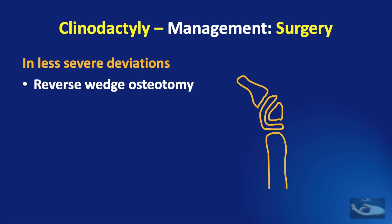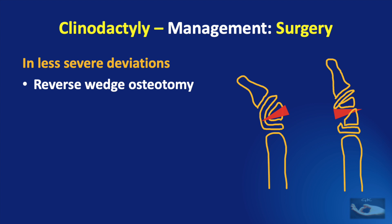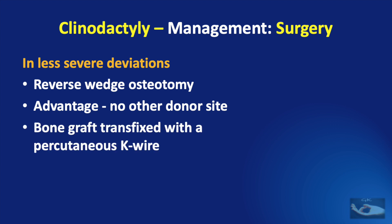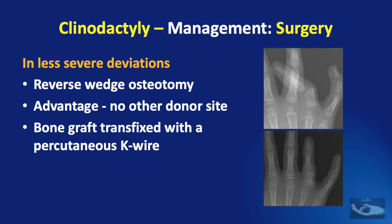In less severe deviations, a reverse wedge osteotomy works well, though it is technically more demanding. A wedge of bone is removed from the middle portion of the middle phalanx on the convex side of the digit, then reversed and placed into the middle phalanx from the concave side to correct alignment. The advantage is that no donor site is necessary, as no additional bone graft is required. Just like the open wedge technique, the graft is transfixed with a percutaneous K-wire. These x-rays show the result after reverse wedge osteotomy.